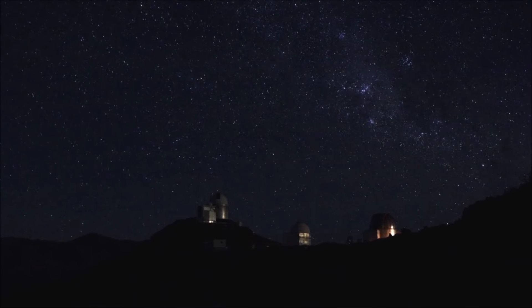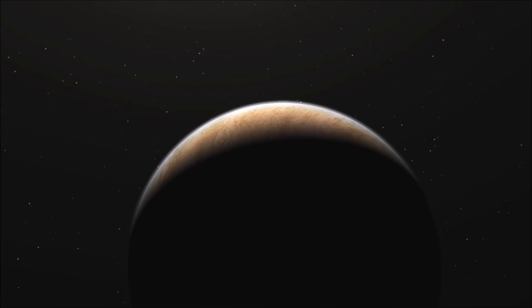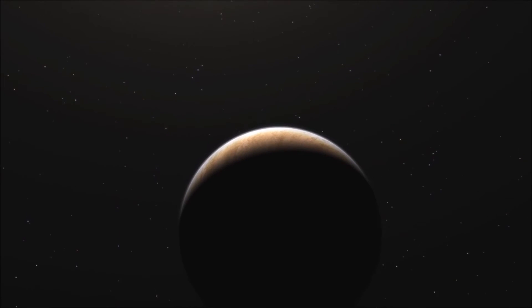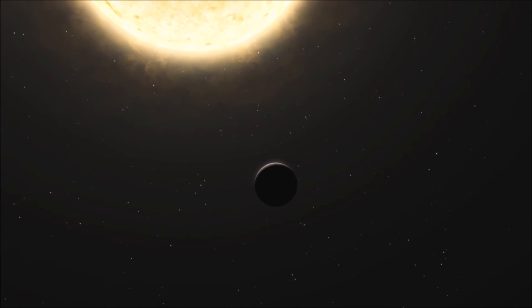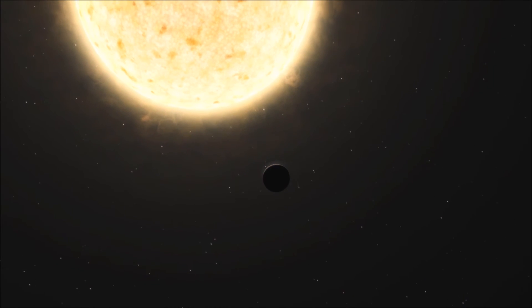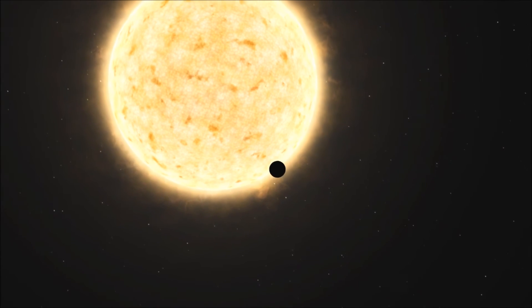The astronomers hypothesize that the planet's orbit might initially have been much larger, but that it moved inwards during the red giant phase. Any closer-in planets may not have been so lucky. Astronomers suggest that some inner planets may have been swallowed by the star during its red giant phase.